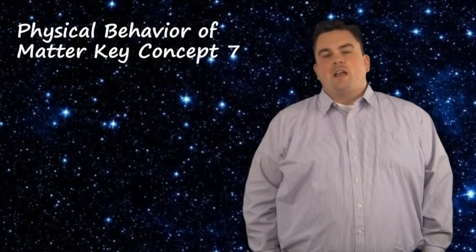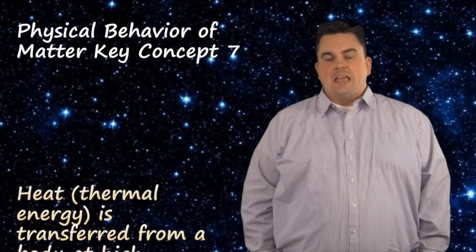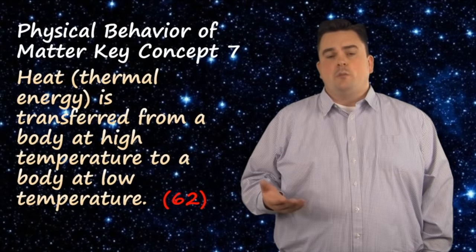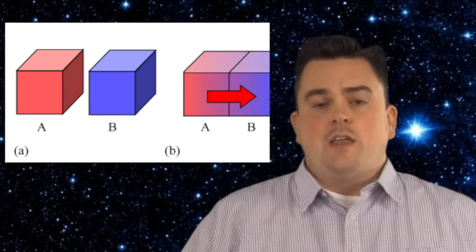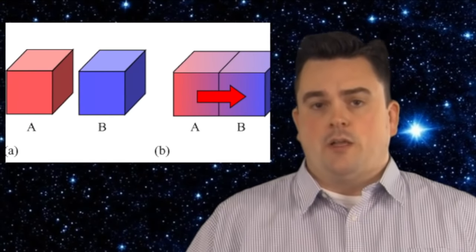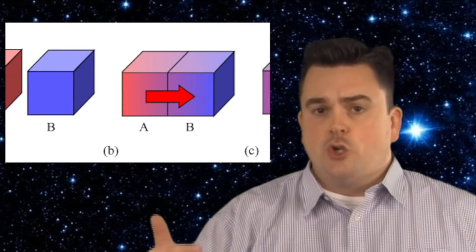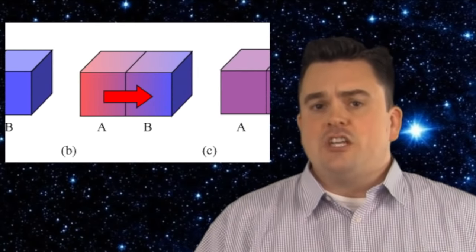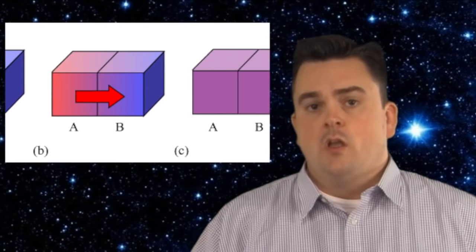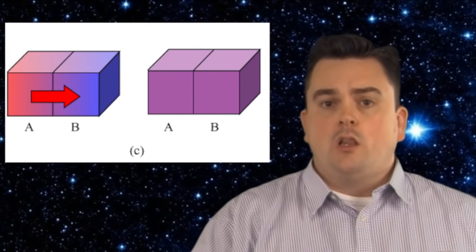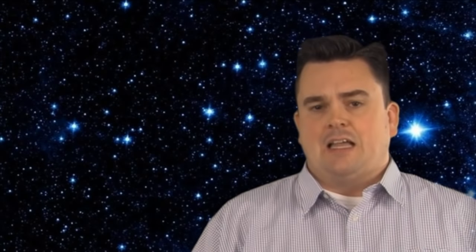Physical behavior of matter, key concept seven. Heat, thermal energy, is transferred from a body at high temperature to a body at low temperature. Think of heat as a transfer of thermal energy. Heat will always transfer from a body at high temperature to low. This is because high energy, fast moving particles will always transfer their energy to slower moving, low energy particles when they collide.